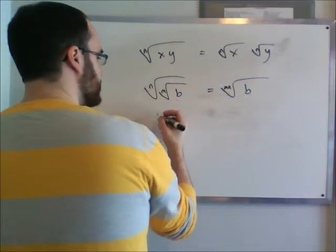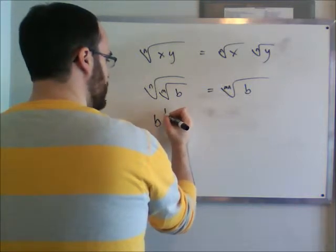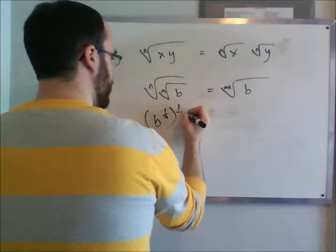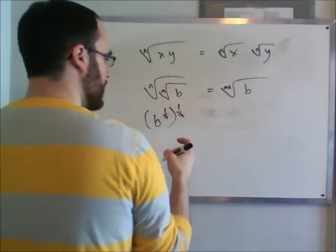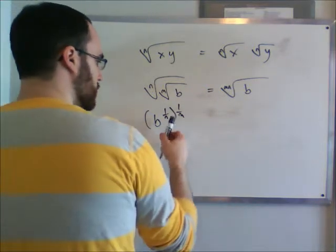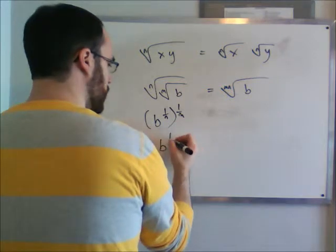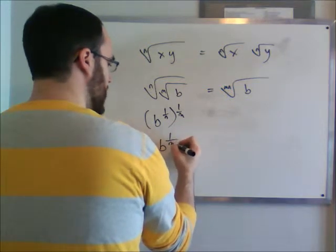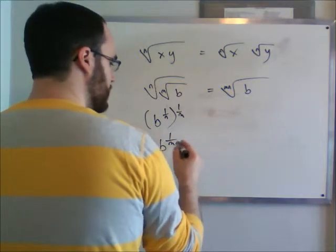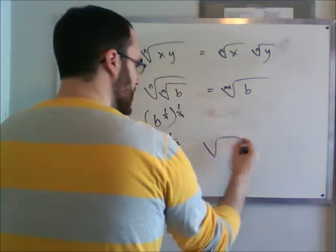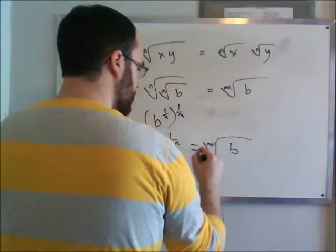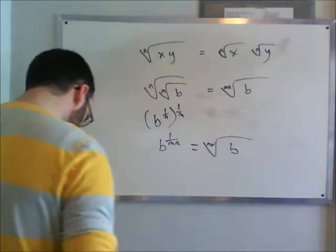In fractional exponent form, that would be b to the power of 1 over n, to the power of 1 over m. When we multiply these fractions, we get b to the 1 over mn. And since 1 over mn is just the mnth root of b, it all works out.